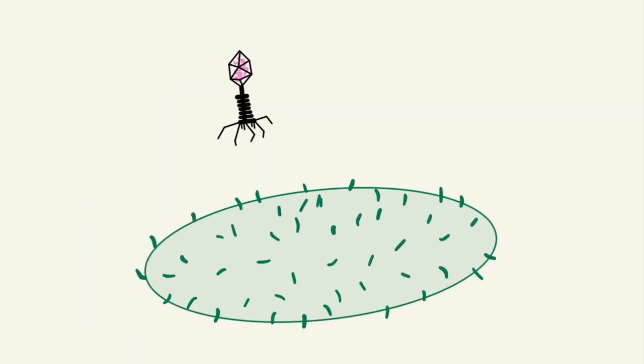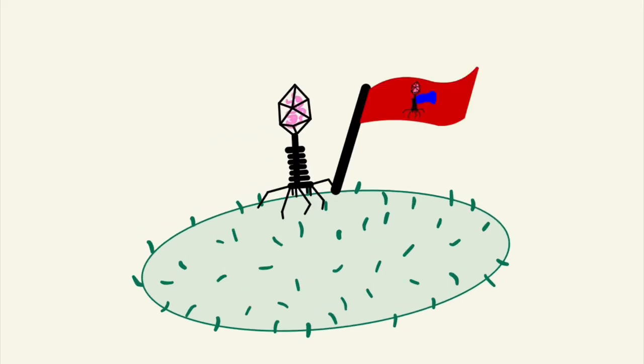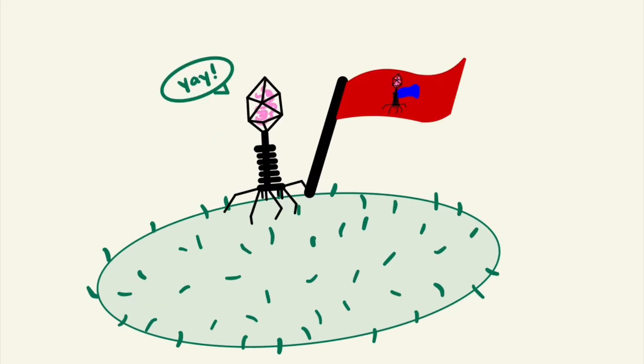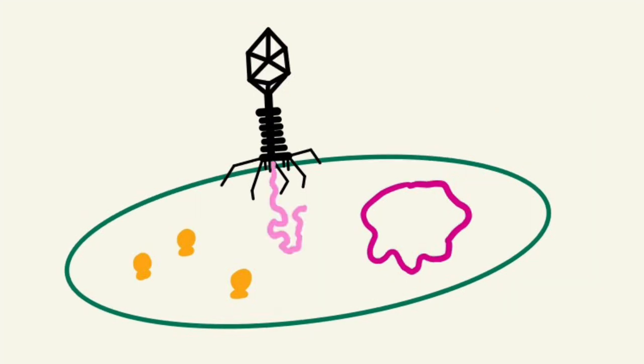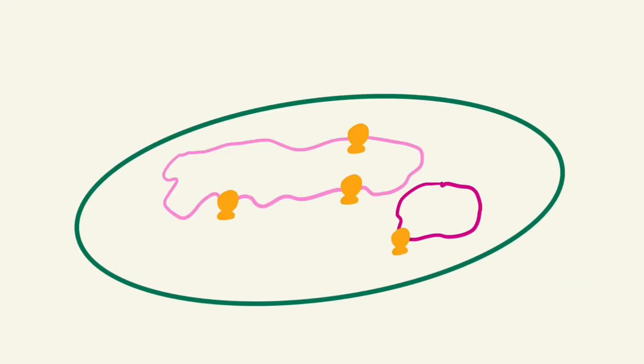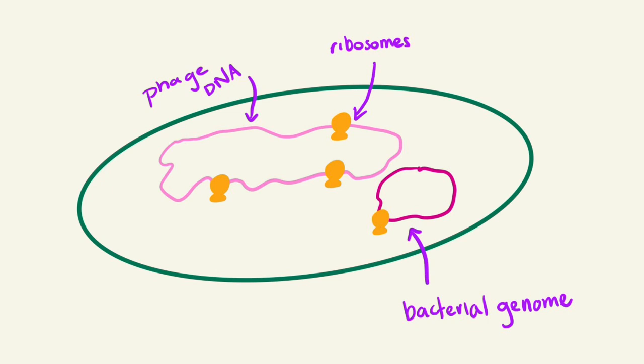Bacteriophage will approach a bacteria and attach via their spikes. After this, the phage will insert its DNA into the bacteria via its shaft. The viral DNA will then be transcribed and translated by the bacterial machinery, such as ribosomes.